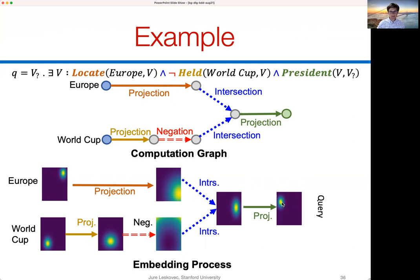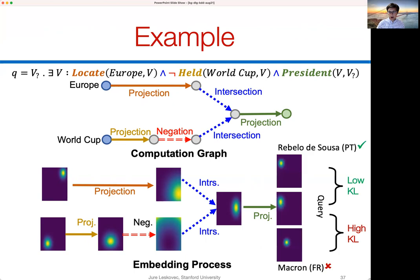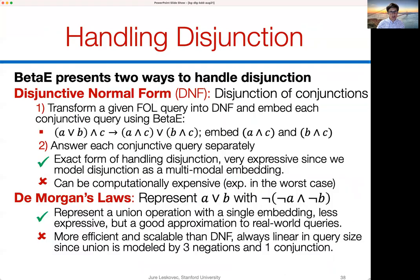We arrive at a final distribution — the embedding of the query — and we measure the KL distance between the presidents of different countries and this embedding. For example, the distance between the president of Portugal and the query embedding will be small because Portugal never held the World Cup, while the distance between the French president and the query will be high because France has held World Cups.